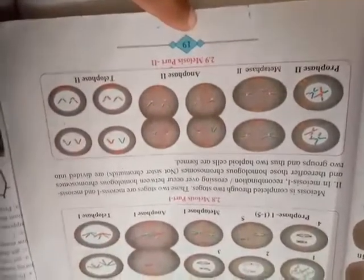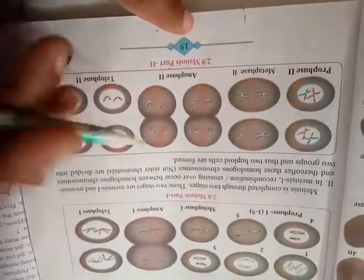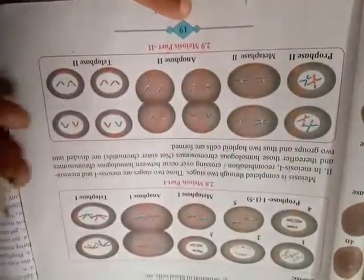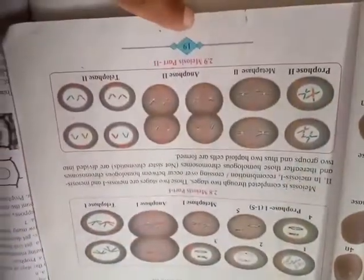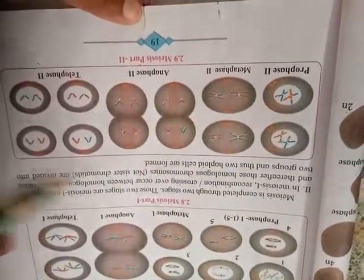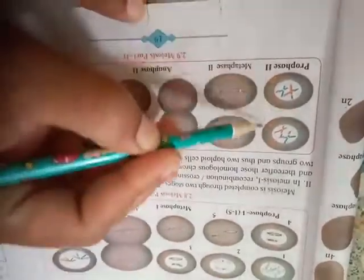All the steps are identical to the mitotic cell division. Whatever was happening in prophase, metaphase, anaphase, telophase, all steps are common in this meiosis 2. Only the difference is, there one cell was taking part and here two daughter cells are taking part.